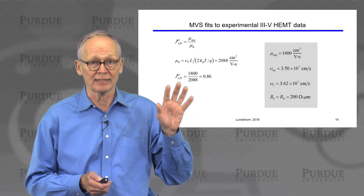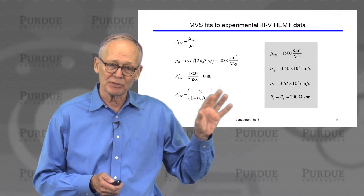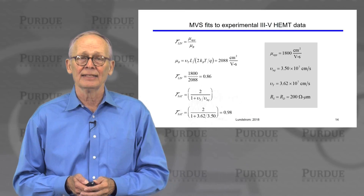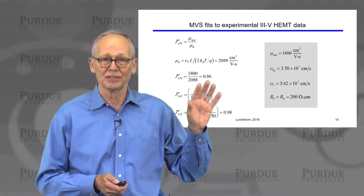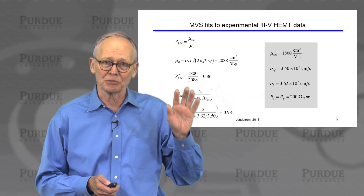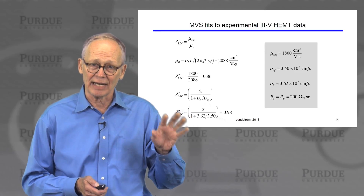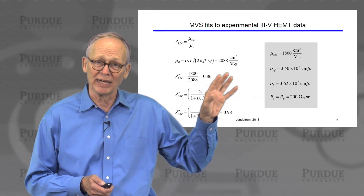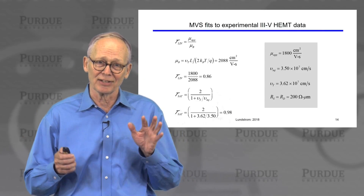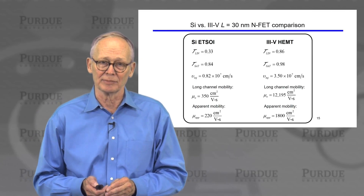In the saturated regime, the transmission should be even higher than 86%, and indeed putting the numbers in, we find the transmission is 98%. So modern III-V field-effect transistors are operating very close to the ballistic limit, even under low bias. Ballistic MOSFETs are not an academic exercise — real devices operate close to the ballistic limit.